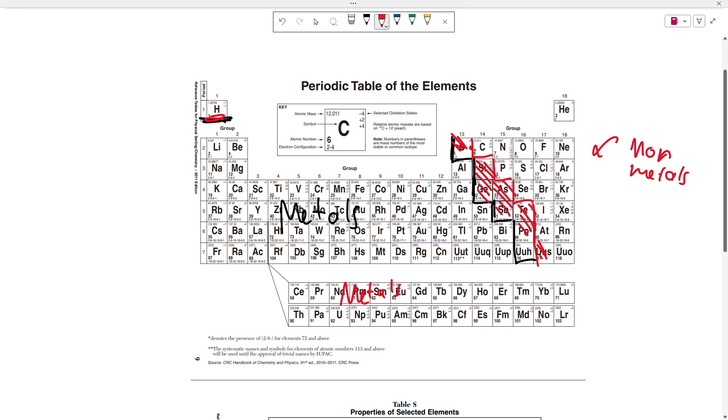One last thing I wanted to touch on is as you go from the left to the right, or as you go down a period, you're going to lose metallic character. So if the regions ever asks you what happens to metallic or how does metallic character change across the period, you can say that it's going to decrease, meaning that as you go from the left to the right, things are going to behave less and less like metals and more and more like non-metals.